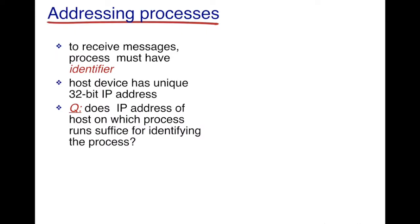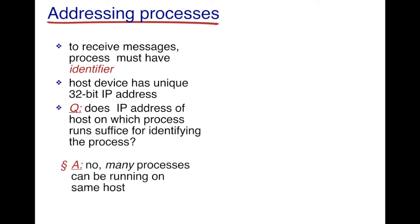For processes to communicate with each other and to send messages, there must be a way to identify different processes uniquely. The first such identifier is the IP address. Every host device has a unique 32-bit IP address. The natural question that arises is: is an IP address sufficient to identify a process? The answer is no.